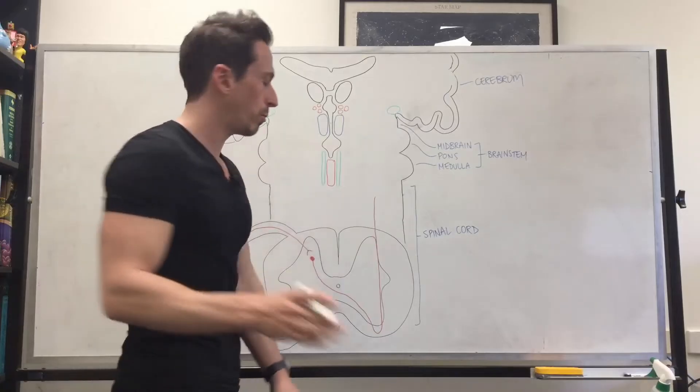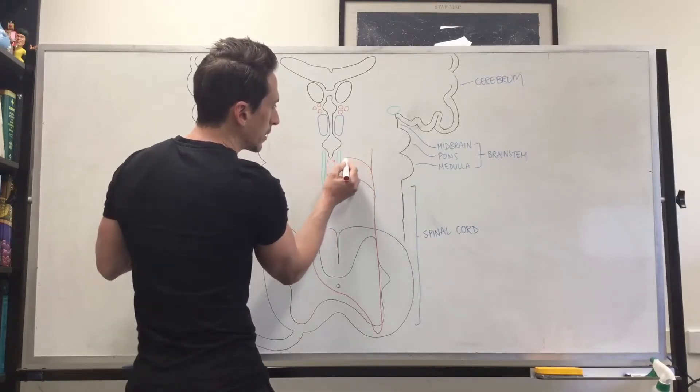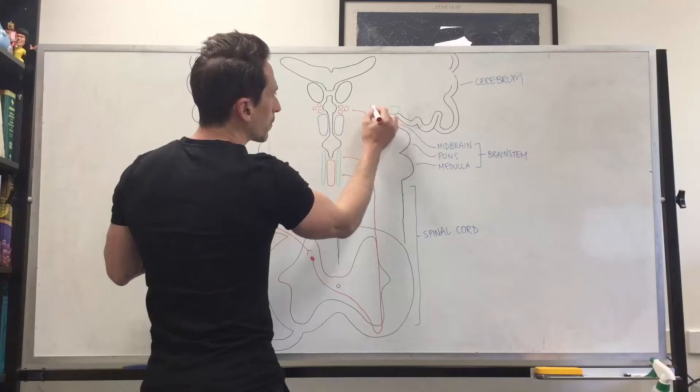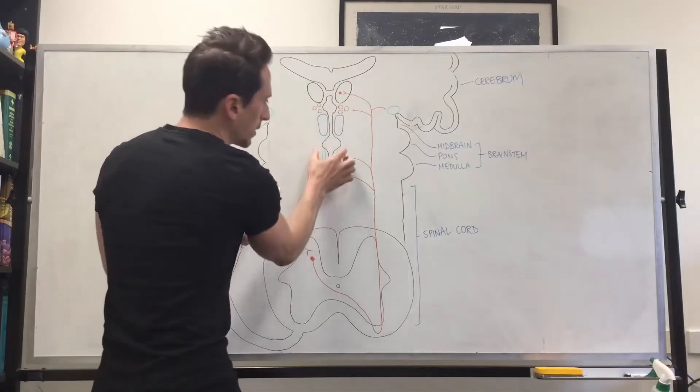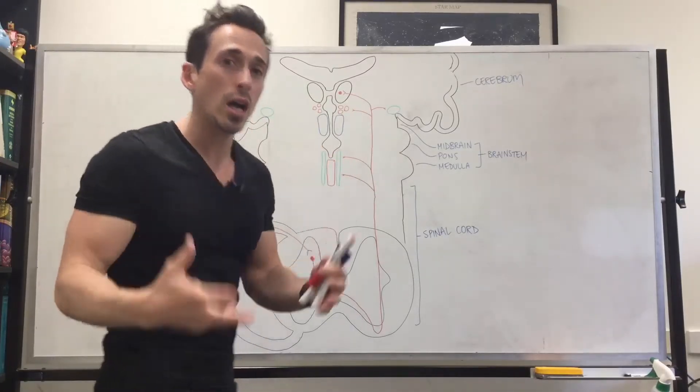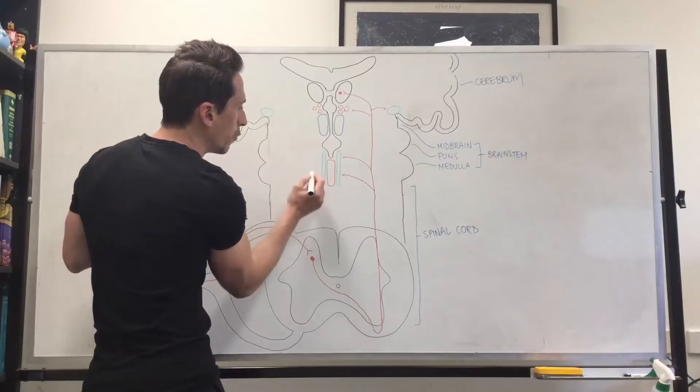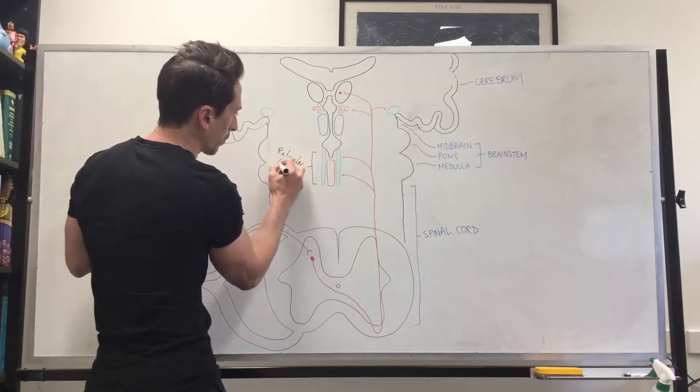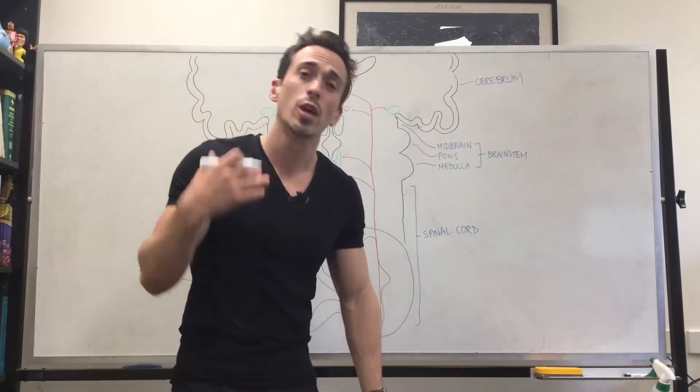Now as it ascends up the spinal cord, here's an important point. As it ascends up, it sends afferent signals to a couple of different areas of the brain. Now these areas that it sends afferents to include this little area here, which we call this entire area here. It's composed of nearly a hundred different nuclei or cell bodies, and that is called the reticular formation. What's important about the reticular formation? The reticular formation is important for consciousness, sleep-wake cycles, arousal.